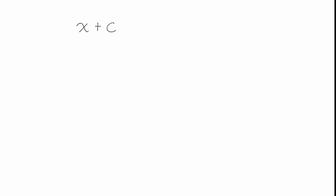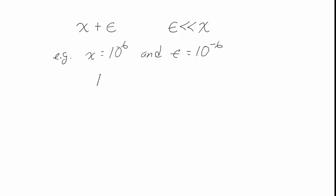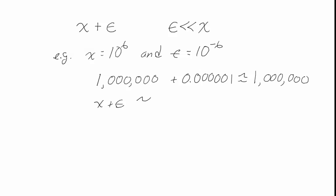When an expression contains a variable which is much smaller than another variable, we can try to simplify it. For example, suppose we have the formula x plus epsilon, where epsilon is a Greek letter that often means something small. If x equals 10 to the sixth and epsilon equals 10 to the minus sixth, then epsilon is much smaller than x, and adding them together is pretty well approximated by just 1,000,000. So x plus epsilon can be approximated as just x when epsilon is much smaller than x.